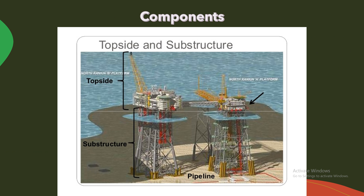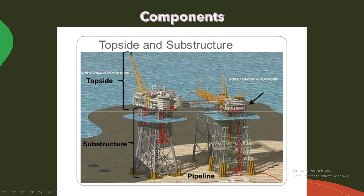In general, we can divide the structure into two parts: topside and substructure. First, topside. On an offshore oil platform, topside refers to the upper half of the structure above sea level — outside the splash zone — on which equipment is installed.